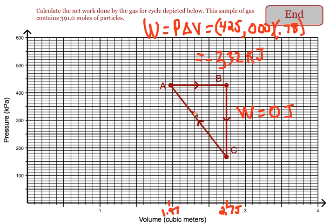For C to A, it's a little trickier because you're having a changing pressure. So you still want to do work equals P delta V, and this time you just use your average pressure.